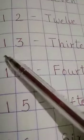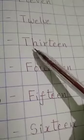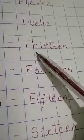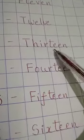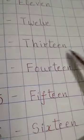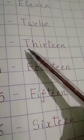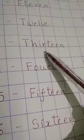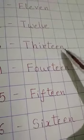After 12, 1-3-13. The spelling of 13 is T-H-I-R-T-E-E-N, 13. Once again, T-H-I-R-T-E-E-N, 13.